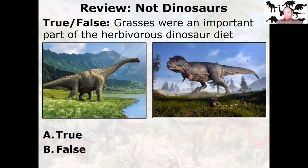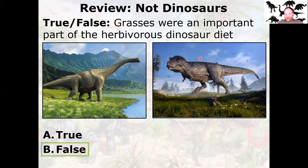So what about grass? True or false: grasses were an important part of the herbivorous dinosaur diet. Here's some art of a dinosaur walking around in a nice lush grassy field, and here's some grass with Tyrannosaurus. Think about wildebeest, bison, moose — large herbivorous mammals today. Grasses are very important staples in their diet. It was not so for the large herbivorous dinosaurs. Grasses were not evolved yet — grasses did not evolve until after the Mesozoic was over.